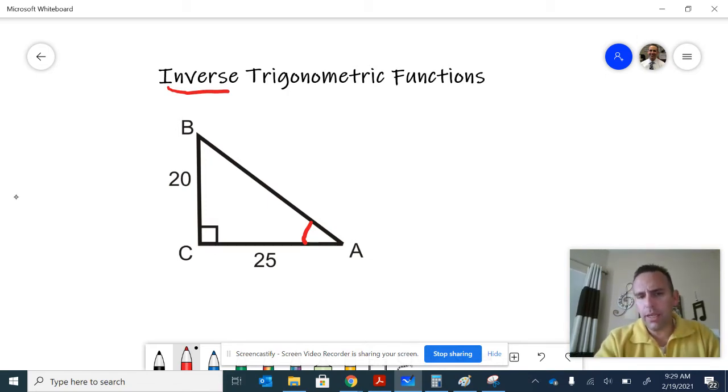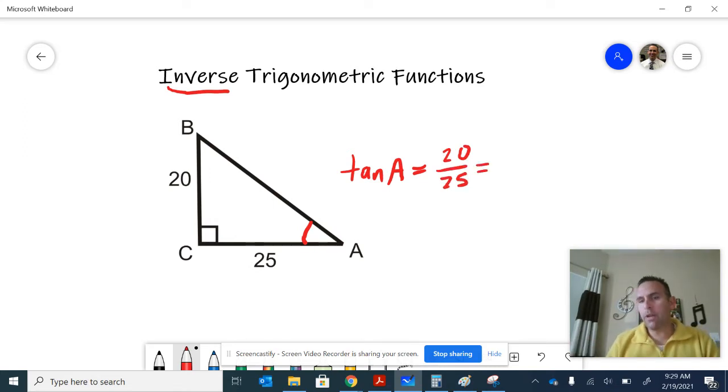Let's take a look at this angle A. In relationship to it, the adjacent side is 25 and the opposite is 20. That would mean that the tangent of angle A is equal to the opposite 20 over 25. Now, you could simplify that further, but if you were to figure out the decimal equivalent of it, 20 divided by 25, I believe you would get 0.8 if you would just type in 20 divided by 25 into your calculator.